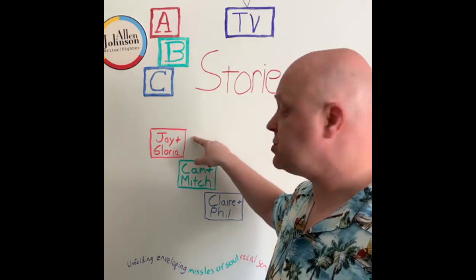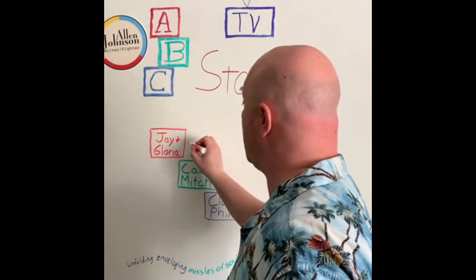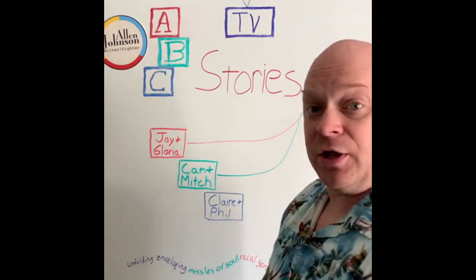— you might have an A story which starts out with a Jay and Gloria-based story. Cam and Mitch's story would be the B story, and Claire and Phil's story would be the C story. As you go through the script, you spend the most time with Jay and Gloria as the stakes rise to the climax, and then less time with Cam and Mitch going along that same path.